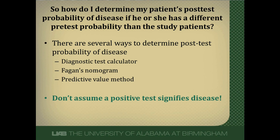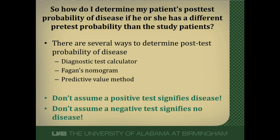A very important point: don't assume a positive test signifies disease. As shown in the PIOPED-2 data, if you start with a low probability of disease, a positive CTA does not guarantee a pulmonary embolus. Likewise, don't assume a negative test means no disease. In the PIOPED-2 data, starting with a high pre-test probability but getting a negative CTA still left a 40% chance of pulmonary embolus. Doctors make this mistake all the time. Get in the habit of knowing the sensitivity and specificity of the tests you use and making the calculation — don't equate positive and negative with presence and absence of disease.